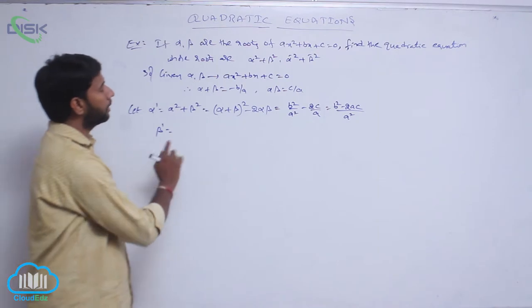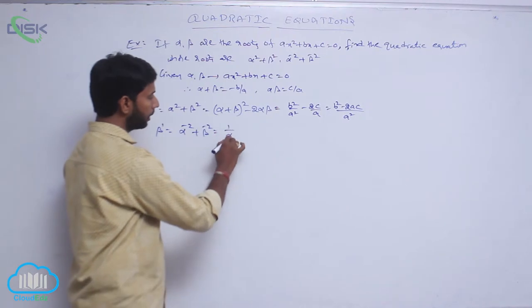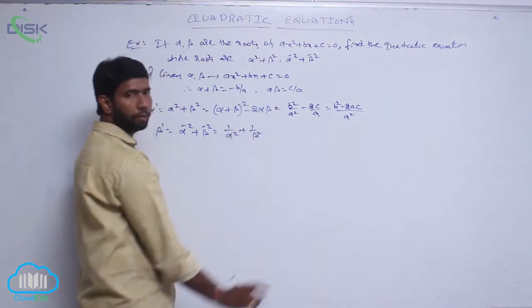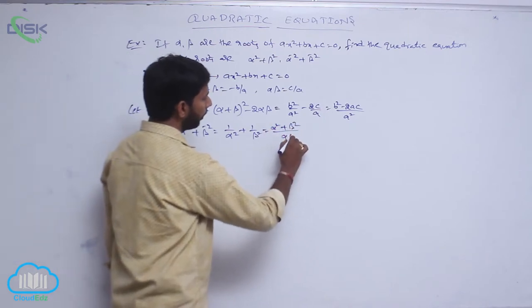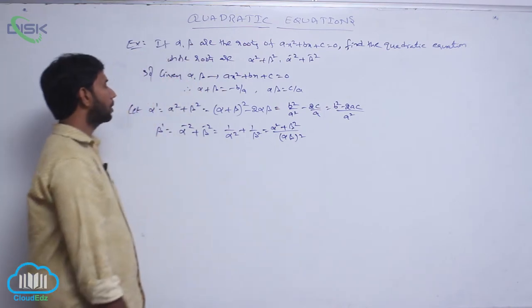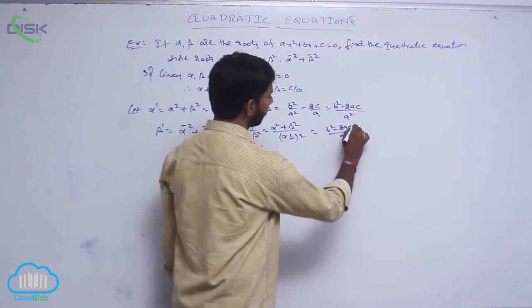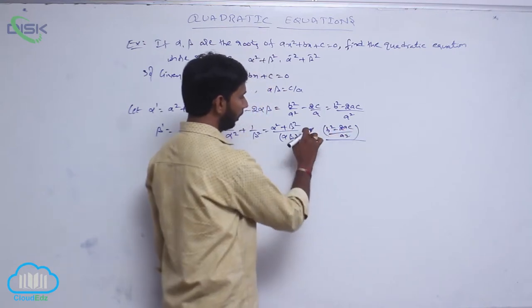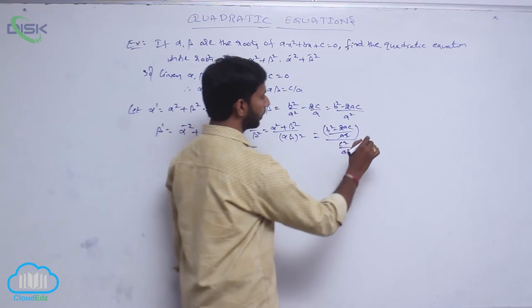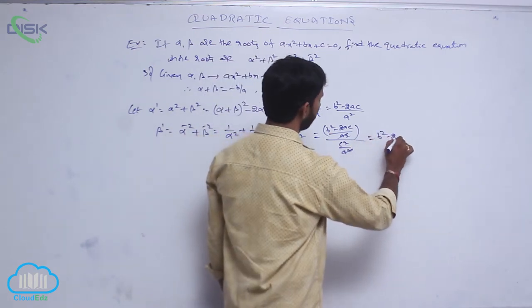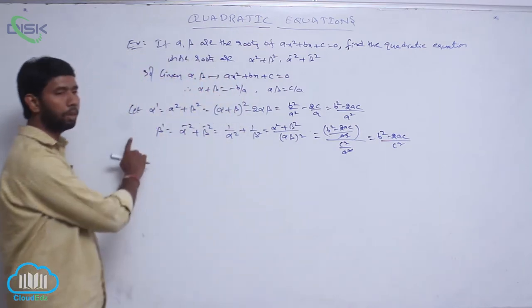Let beta' = alpha⁻² + beta⁻² = 1/alpha² + 1/beta². After taking LCM, this equals (alpha² + beta²) / (alpha·beta)². Substituting, alpha² + beta² = (b² - 2ac)/a², and (alpha·beta)² = c²/a². The a² terms cancel, giving beta' = (b² - 2ac)/c². So the two roots are (b² - 2ac)/a² and (b² - 2ac)/c².